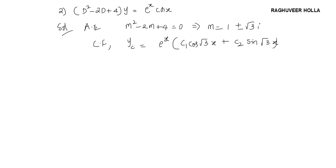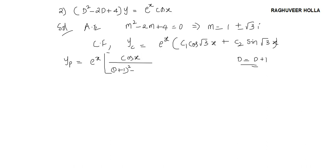Now let us find what is yp here. We can consider D as t plus 1. When I substitute D as D plus 1, I get e to the power of x outside, with cos x divided by (D plus 1) whole squared minus 2(D plus 1) plus 4.